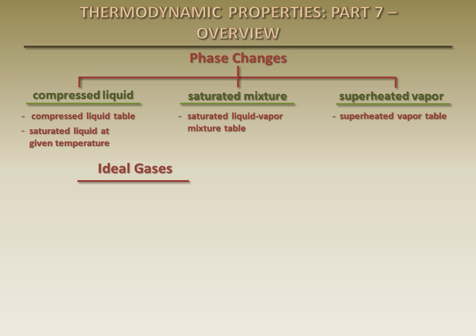The pressure, volume, mass, and temperature of ideal gases are related by the ideal gas equation of state. Changes in the specific internal energy of ideal gases can be found by integrating the specific heat at constant volume with respect to temperature over the process.